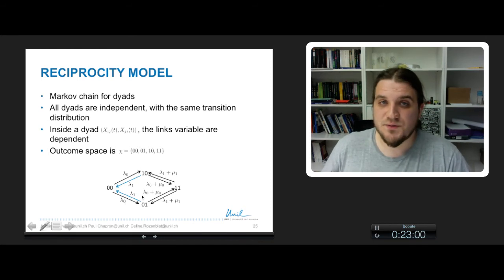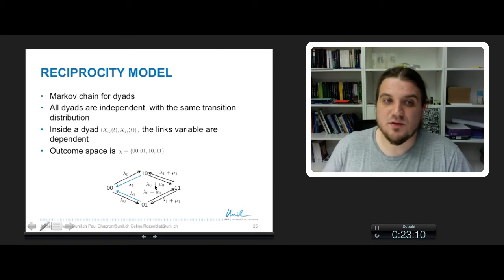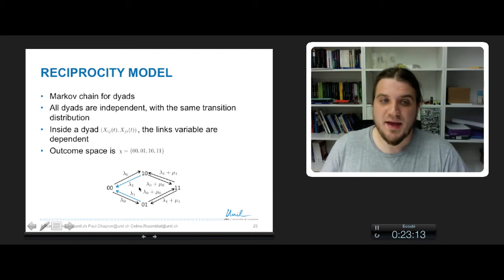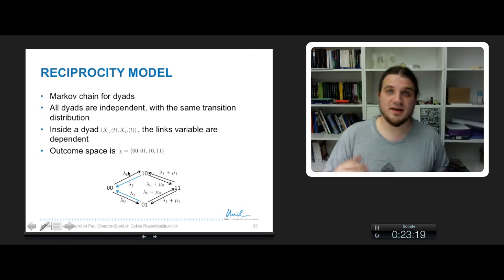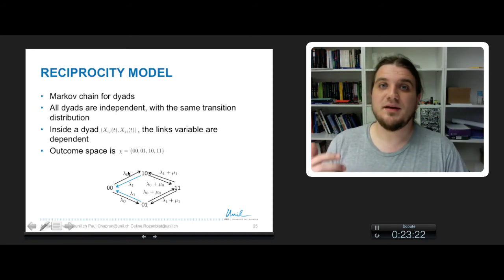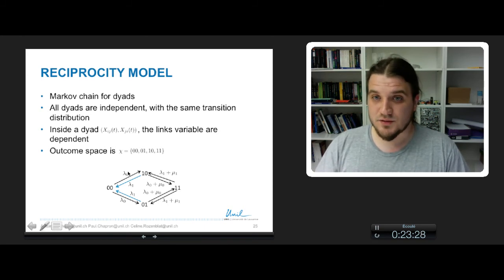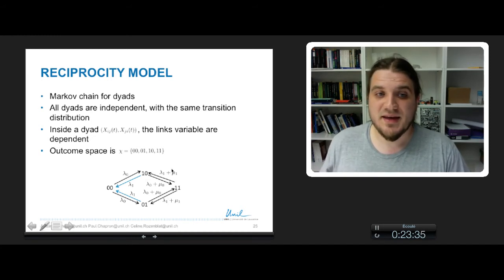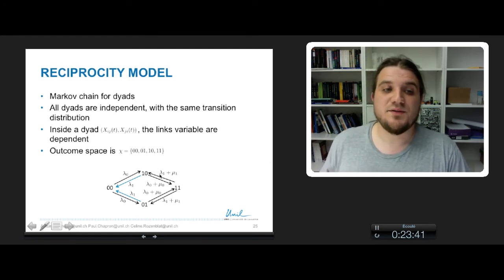These four rates can lead to very different network configurations. If you make a very high rate that completes reciprocity, so a very high value of mu 0, and a reasonably high value of lambda 0, you will have a lot of chance to make some links appear and being completed by the reciprocal link. You can also have some model where the reciprocity is destroyed by taking lambda 1 plus mu 1 to be high. And if you take lambda 1 to be high, there is a lot of link destruction.